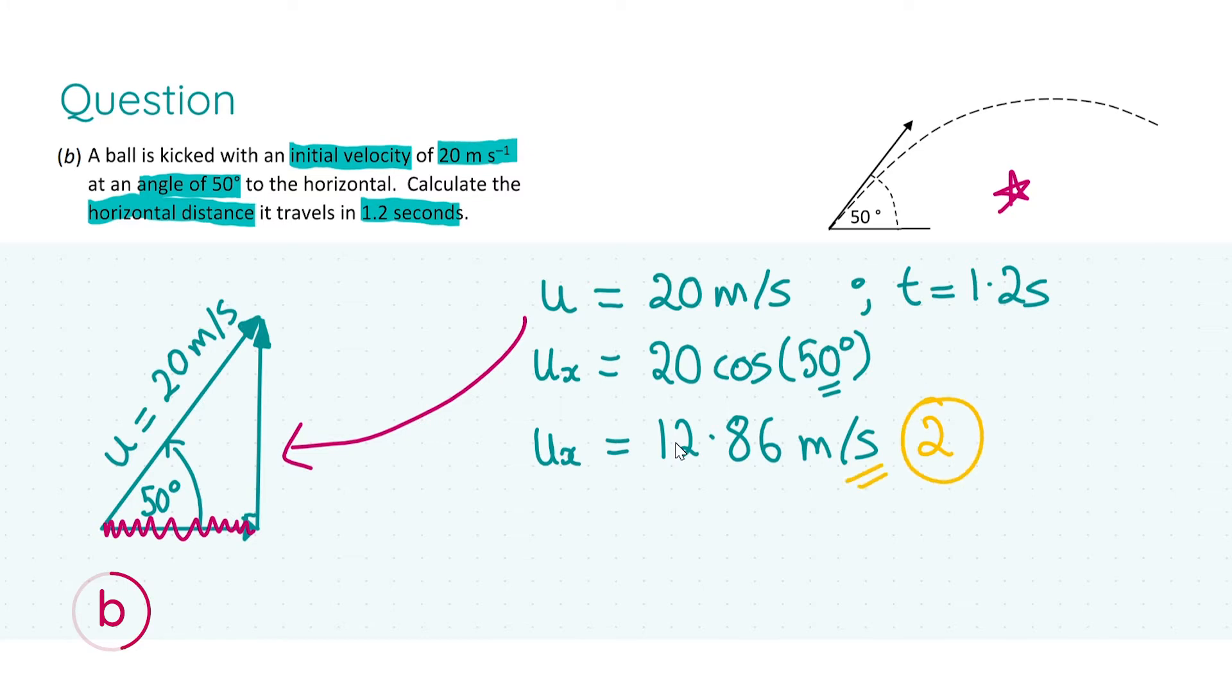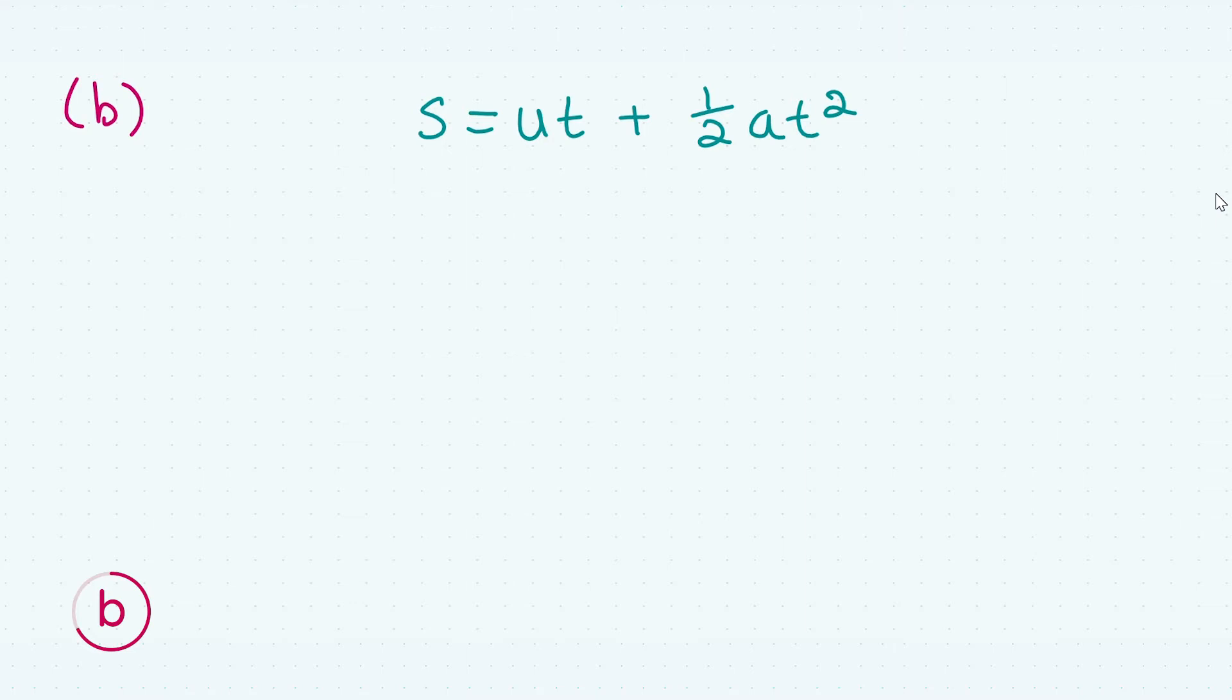We have the horizontal speed, we have the time, how do we find the horizontal distance? By definition, you can see in the schematic to the top right the projectile's only acceleration is in the vertical direction, influenced by gravity. We have no horizontal acceleration, so the horizontal acceleration is zero. We can find a formula that fits all the information: s equals ut plus a half at squared.